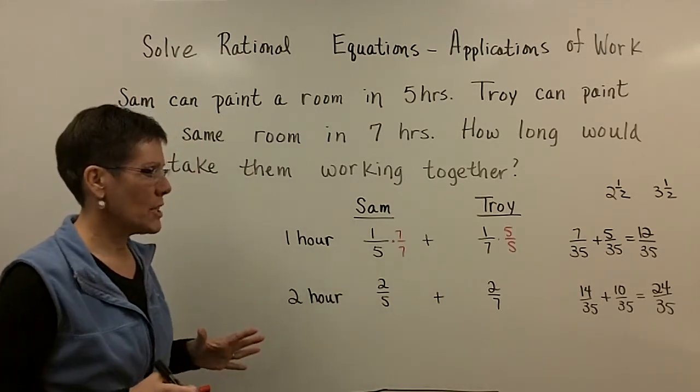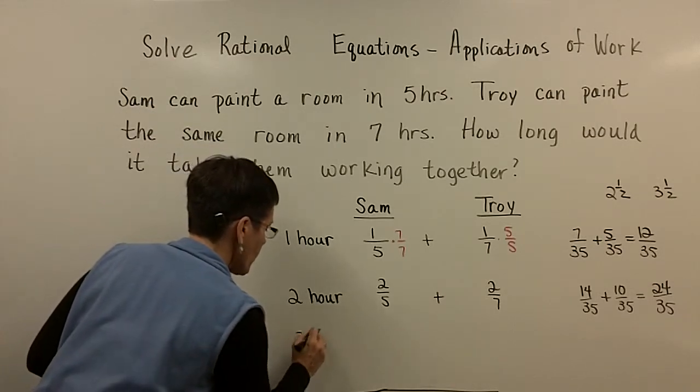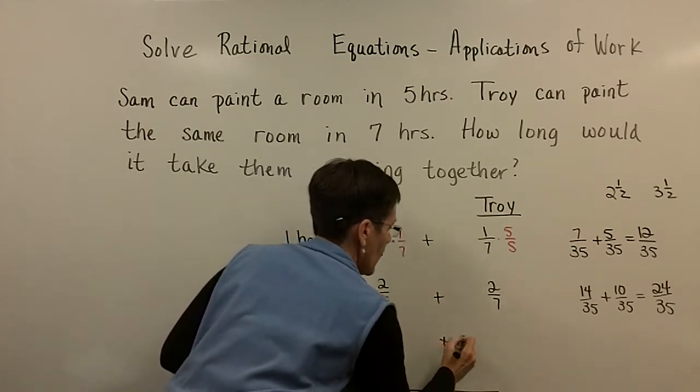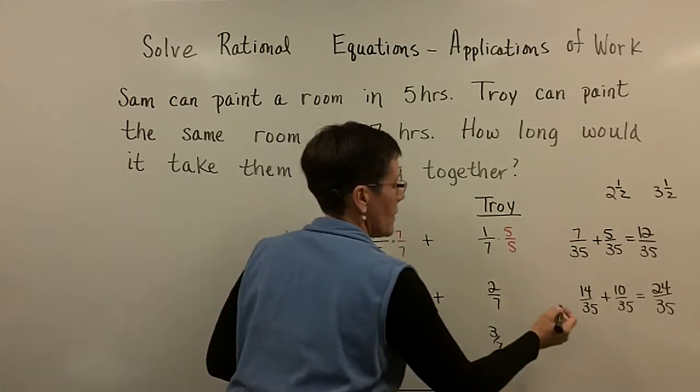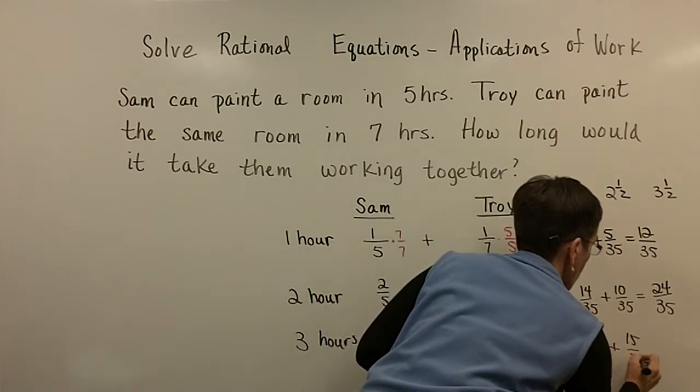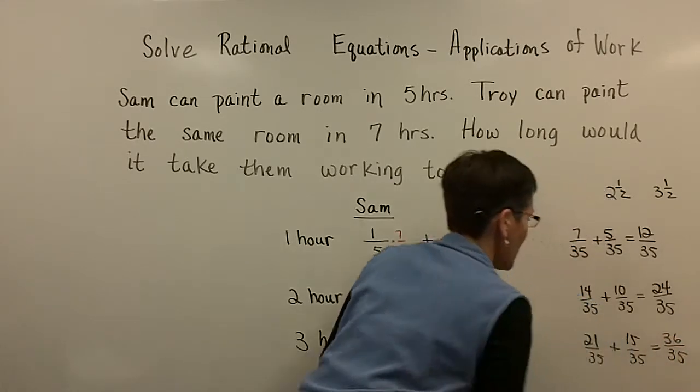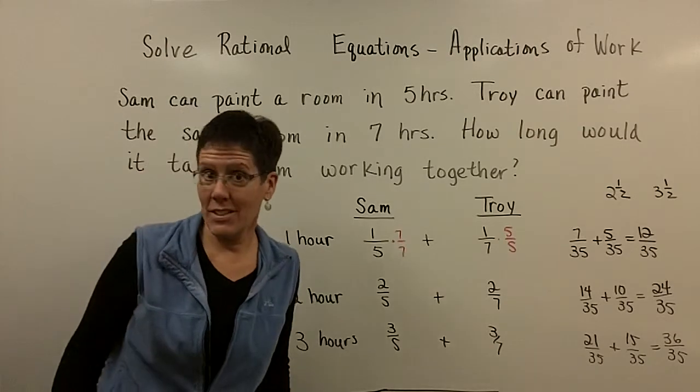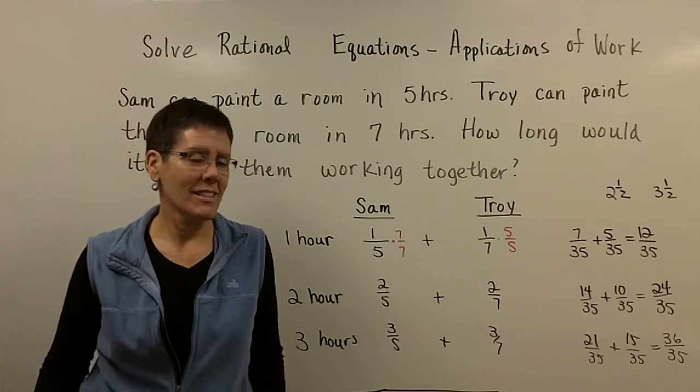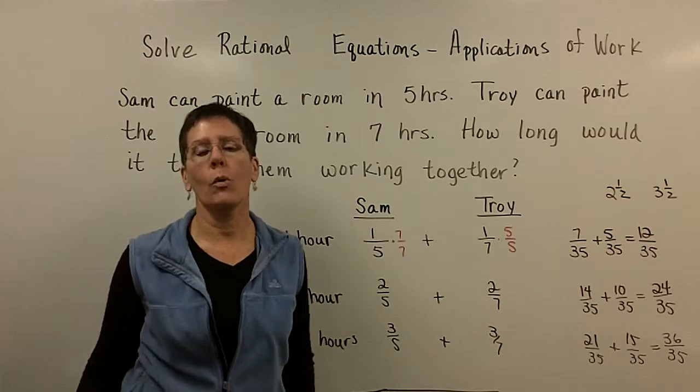So always want to finish the whole project. And if we did this again, if we said they worked for three hours, then we'd have three-fifths for Sam, and three-sevenths for Troy, and that would be twenty-one-thirty-fifths, and fifteen-thirty-fifths, uh-oh, let's see, I think they just did too much. They did thirty-six-thirty-fifths of the painting, and I only wanted thirty-five-thirty-fifths. I wanted this to be one, not less than, or more than, I wanted the whole project done.